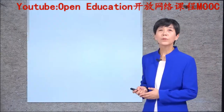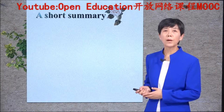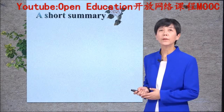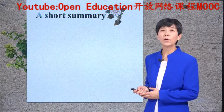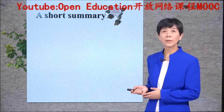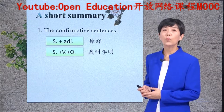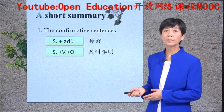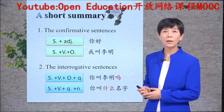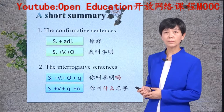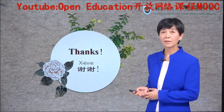Up to now, you have learned the basic order of Chinese sentences in both confirmative and interrogative ways. A short summary: confirmative sentences — 你好、我叫李明; interrogative sentences — 你叫李明吗? and 你叫什么名字? Thank you for listening. That's all for today. Bye-bye.